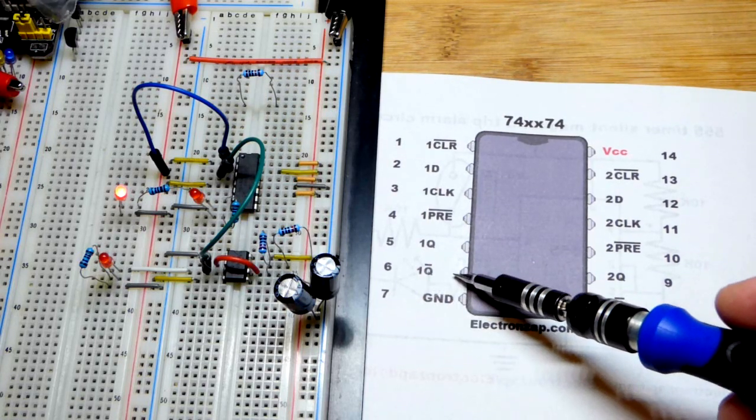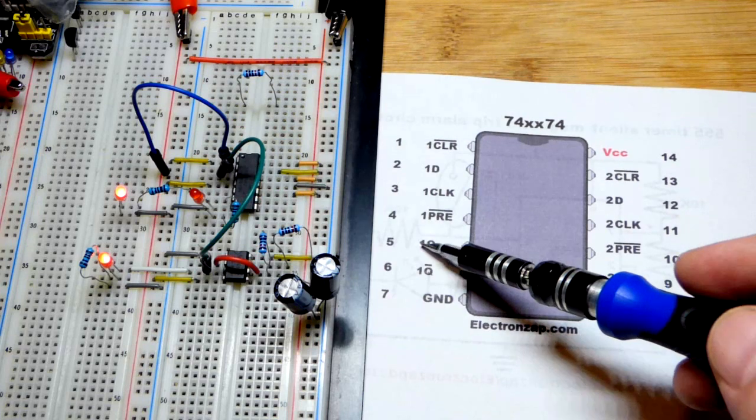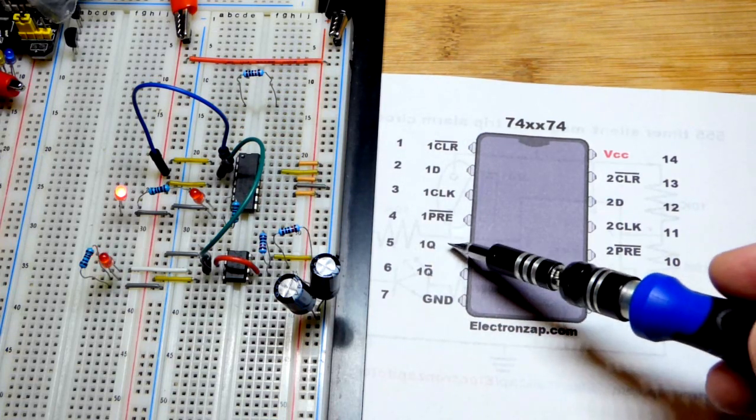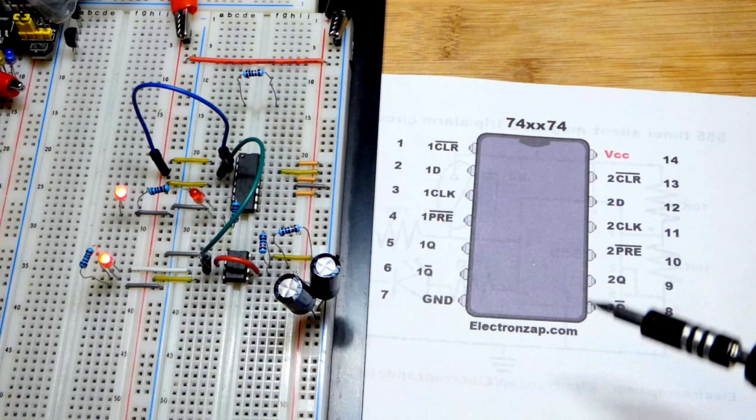So not Q just has the opposite output of what Q does. If Q is high, not Q is low. If Q is low, then not Q is high.